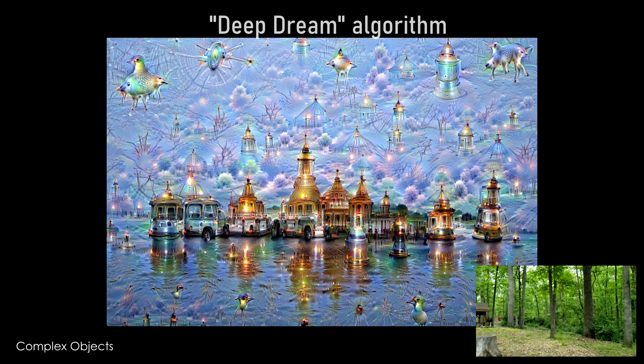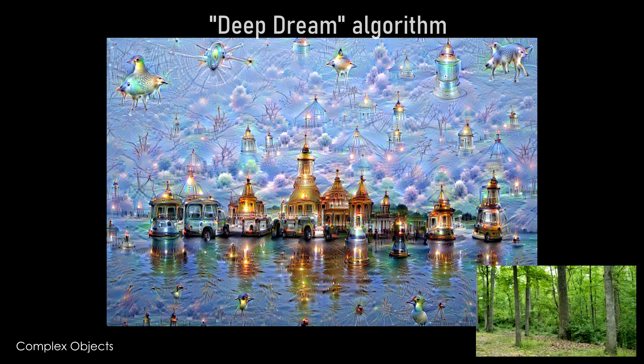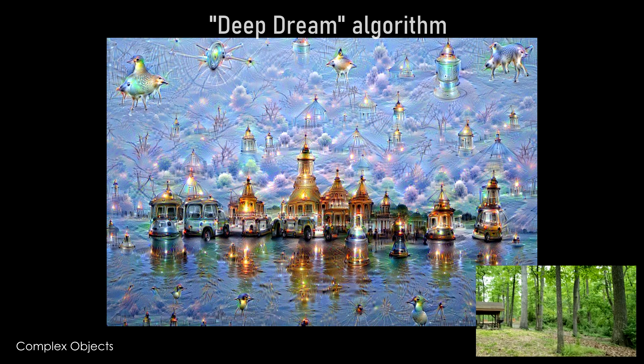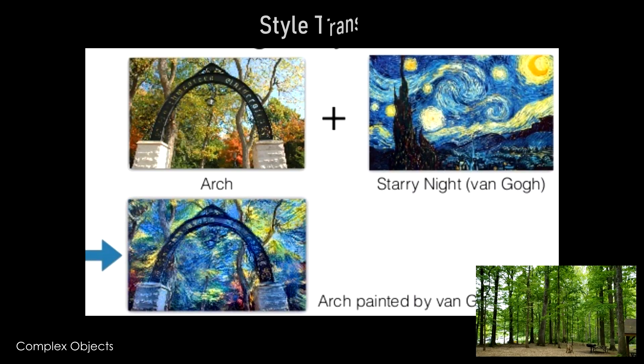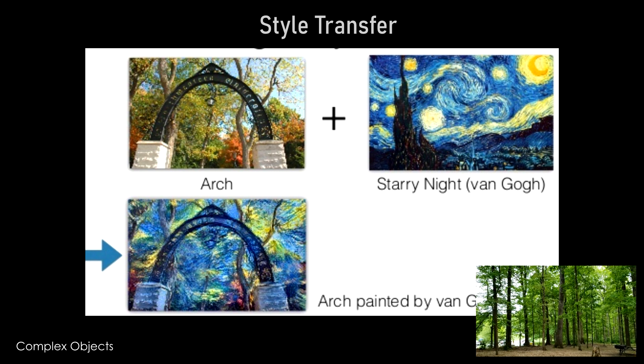And then another example is like the deep dream images. That's also based on sort of producing an image using a convolutional neural network. And so another example is style transfer for deep generative models for images.